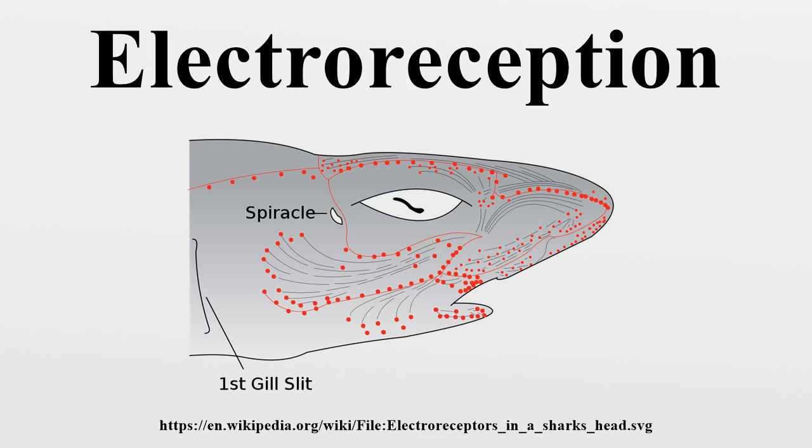Sharks are the most electrically sensitive animals known, responding to DC fields as low as 5 nanovolts per centimeter. The electric field sensors of sharks are called the ampullae of Lorenzini. They consist of electroreceptor cells connected to the seawater by pores on their snouts and other zones of the head.